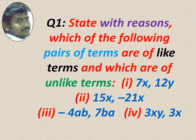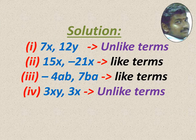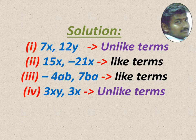Question number one: State with reasons which of the following pairs of terms are like terms and which are unlike terms. 7x and 12y — both are unlike terms. 15x and minus 21x — both are like terms since both have x. Minus ab and 7ba — ab and ba are same, so like terms. 3xy and 3x — xy and x are different factors, so unlike terms.